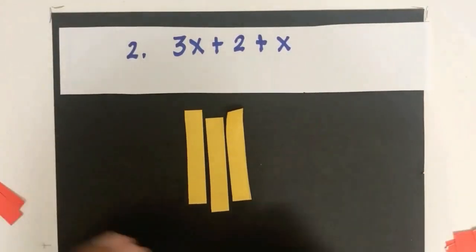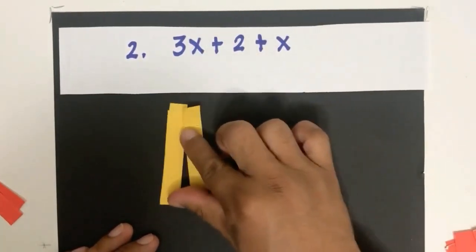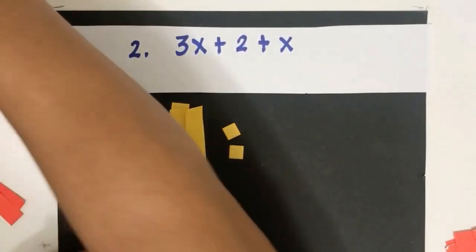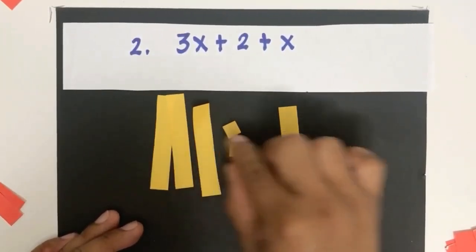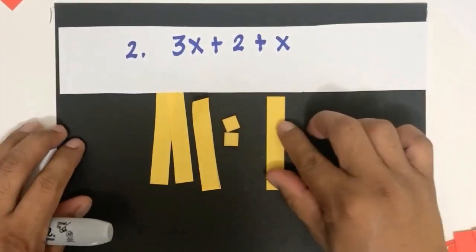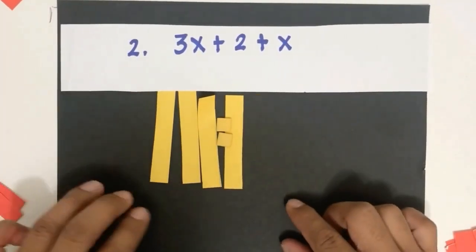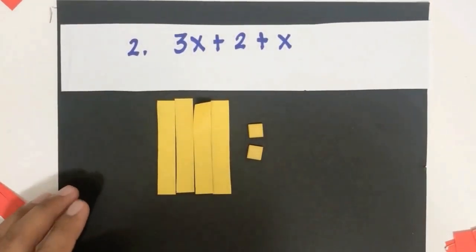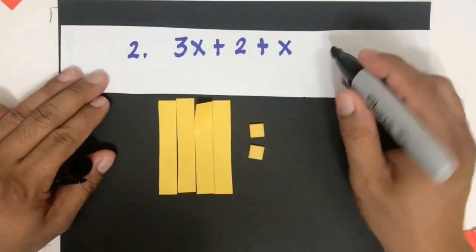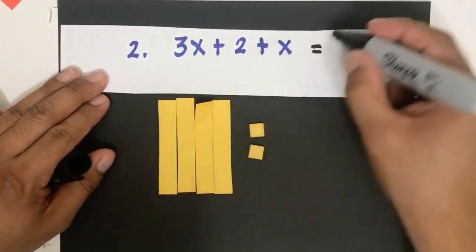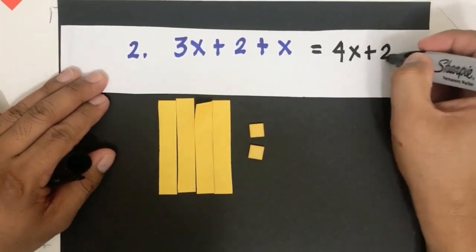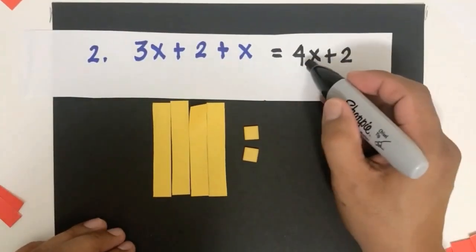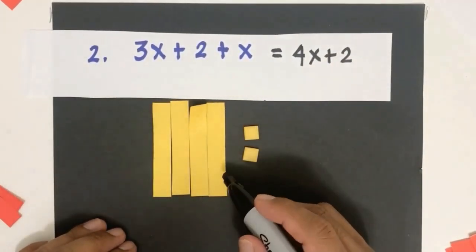If we have 3x plus 2 plus x, we represent 3x, then positive 2, then x. Combining them all together, we get 4x plus 2. We cannot combine 2 with the x's because they are of different kinds. Therefore 3x plus 2 plus x equals 4x plus 2, which we cannot simplify further.